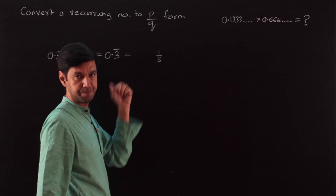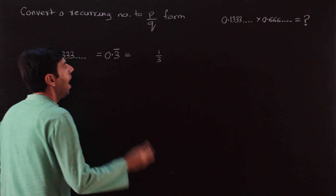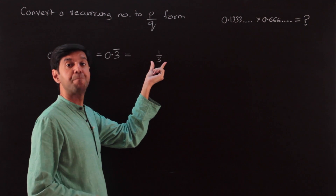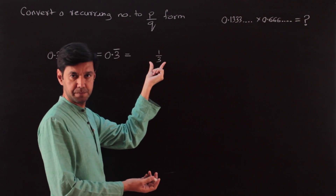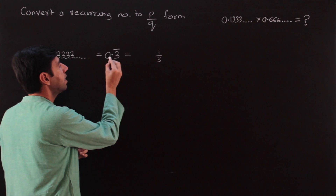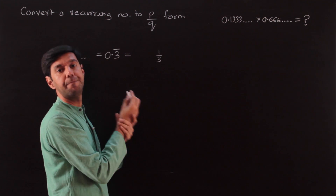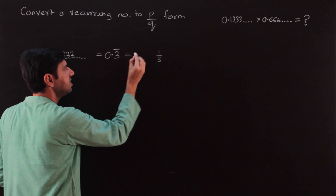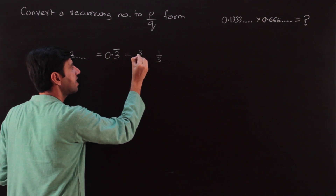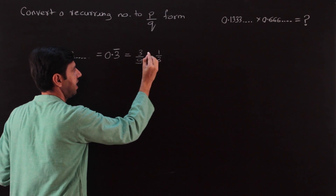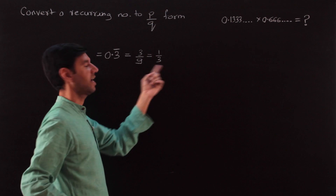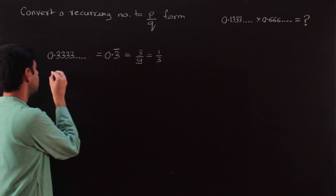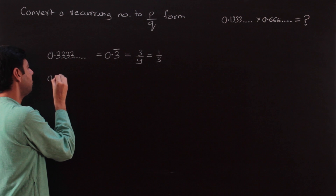The way to convert a recurring number to a p/q form is: if there is a single digit that recurs, that digit divided by 9 is going to be the p/q form, and it works always.